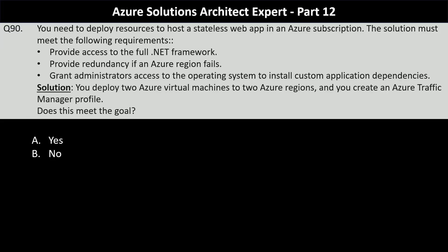Next question. You need to deploy resources to host a stateless web app in an Azure subscription. The solution must provide access to the full .NET framework, provide redundancy if an Azure region fails, and grant administrators access to the operating system to install custom application dependencies. The proposed solution is to deploy two Azure virtual machines to two Azure regions and create an Azure Traffic Manager profile. Does this meet the goal?